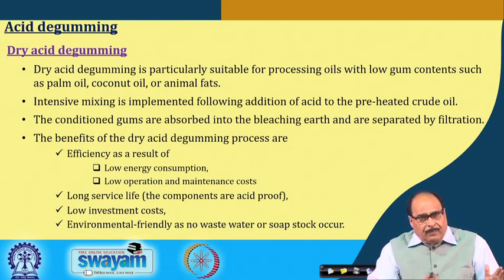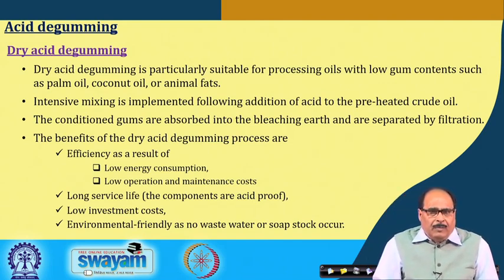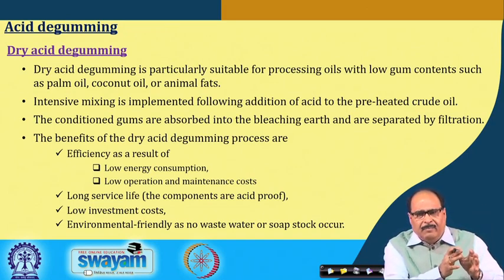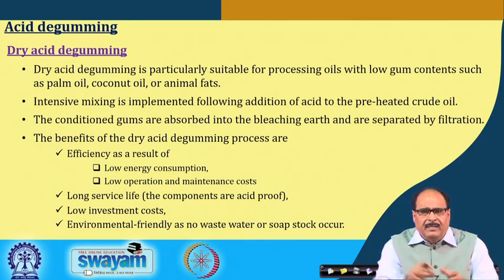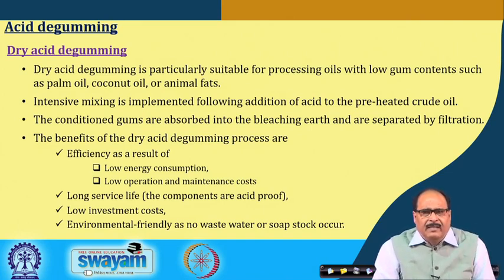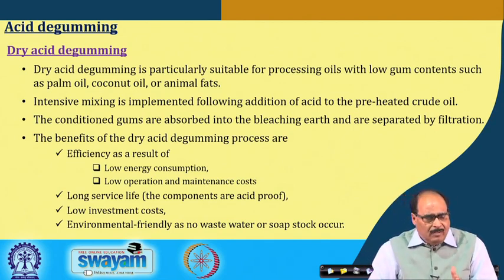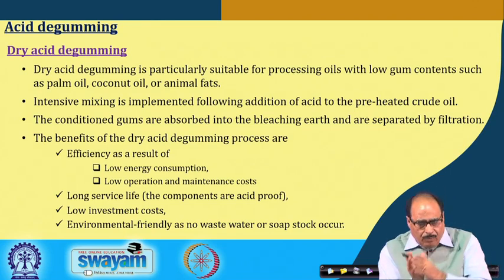After water degumming at the extraction plant, the oil is pumped to the refining plant. It is noted that refining starts from the storage tank itself, as during storage under good conditions some oil insolubles settle. From the oil storage tank, the oil passes to the acid degumming unit, which may be of two types: dry acid degumming or wet acid degumming.